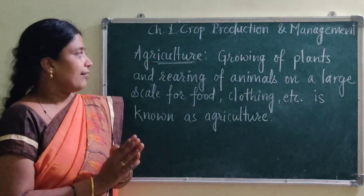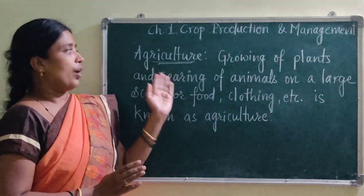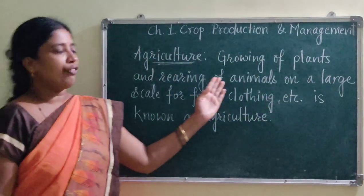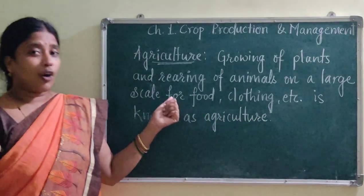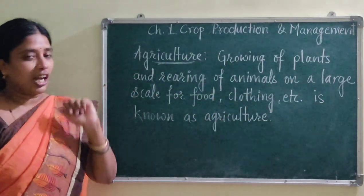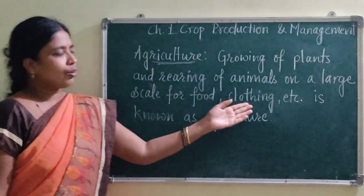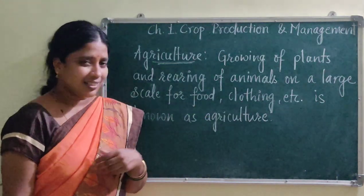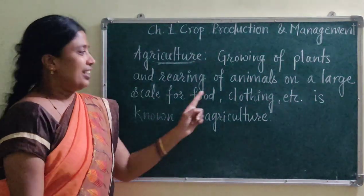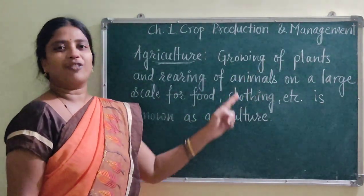If you want a broader view, agriculture can be understood as the growing of plants and rearing of animals on a large scale. For what purpose? For food, clothing, etc. Now the question comes: do we get clothes from plants? Yes, we do. The material from which our clothes are made is obtained from plants — like cotton. We get cotton from cotton plants.